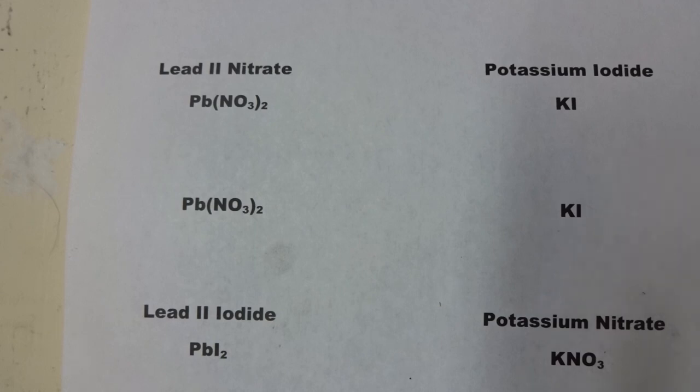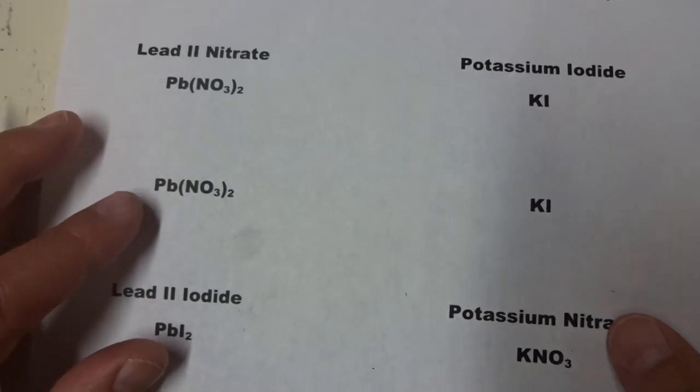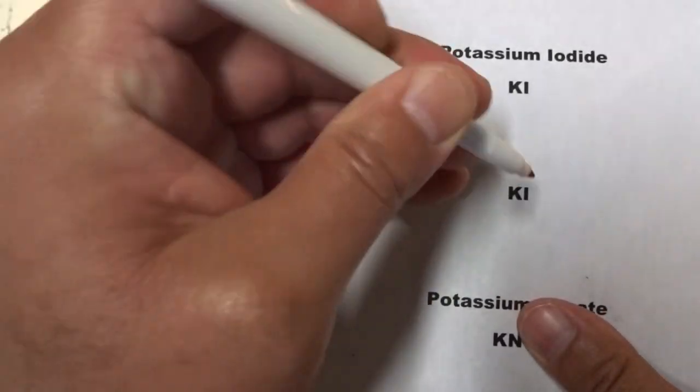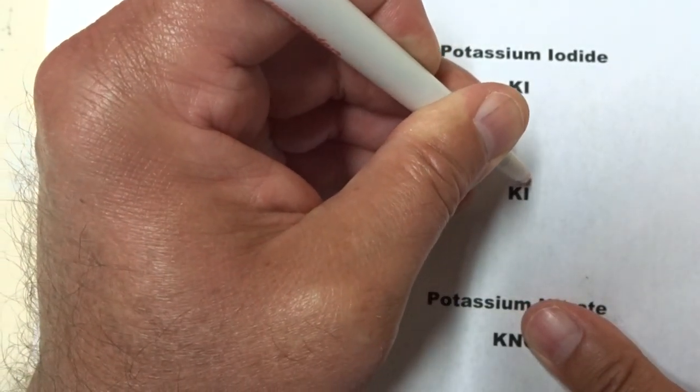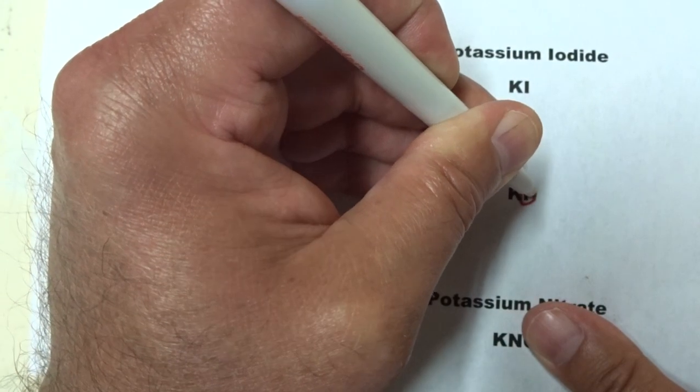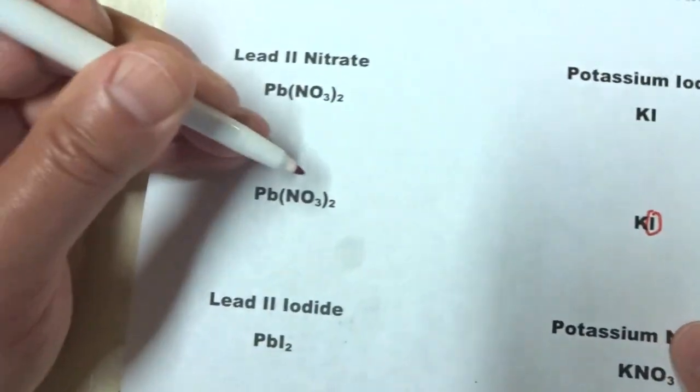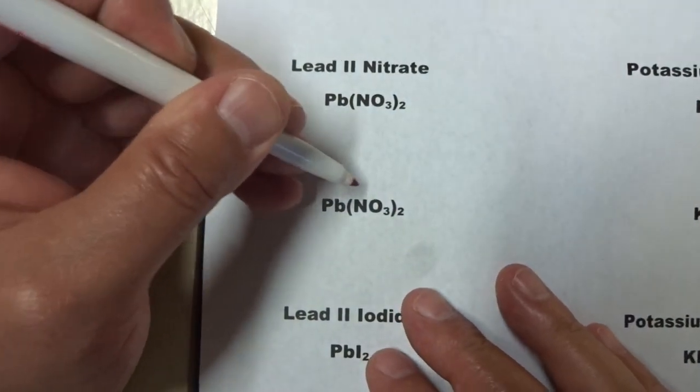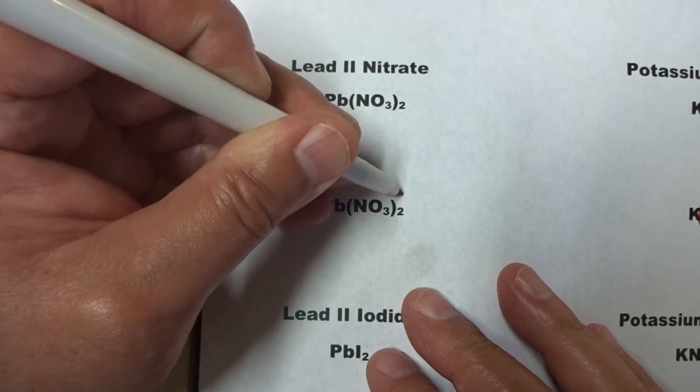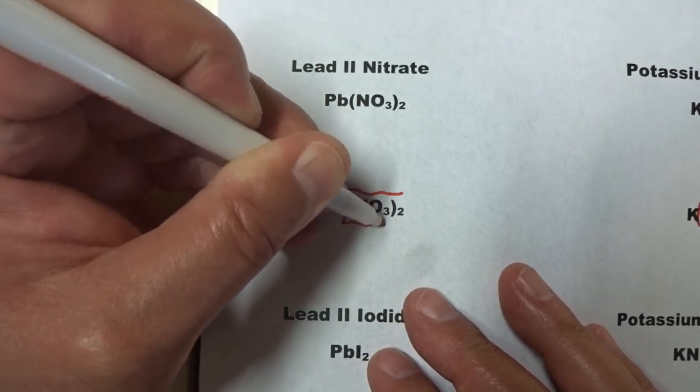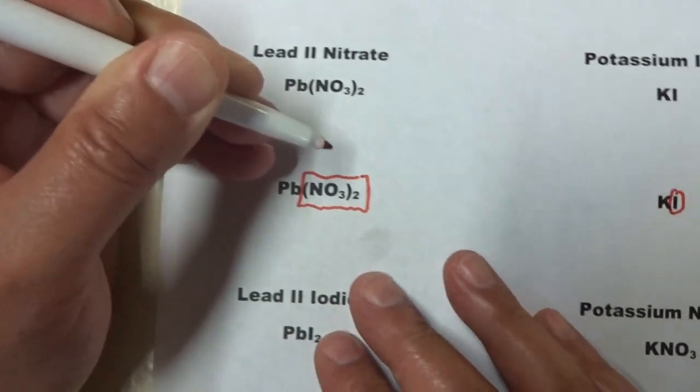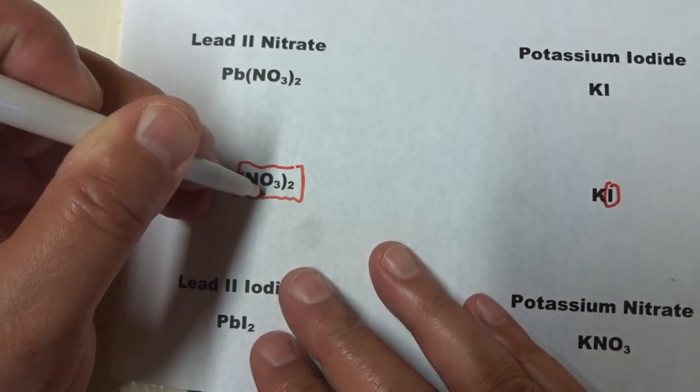In this reaction, the anion, in this case iodine, of one molecule, and the anion of the other, in this case nitrate, swap places on the molecule.